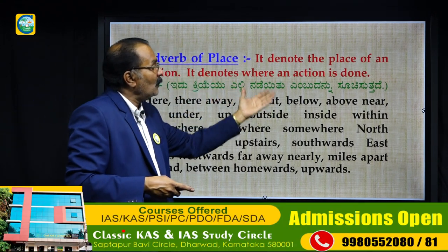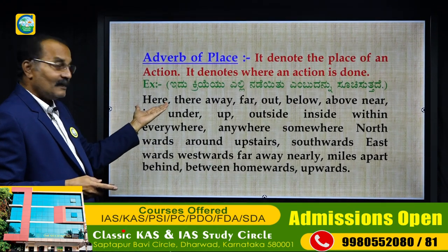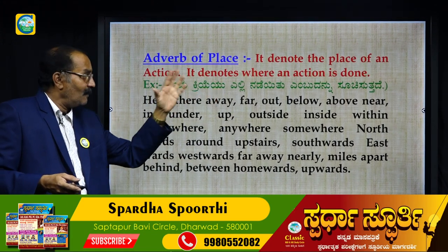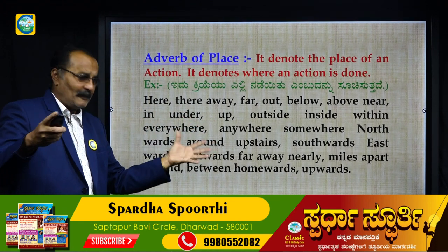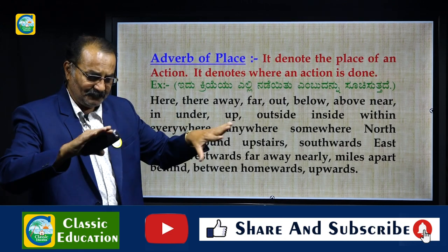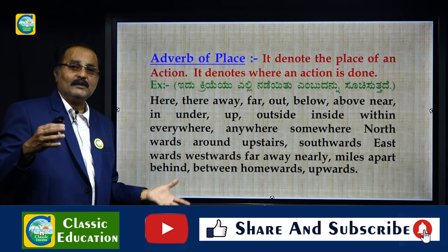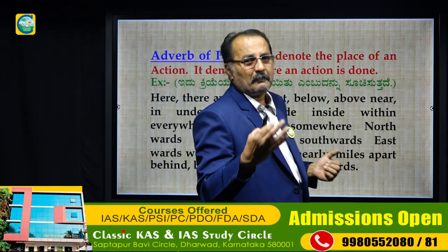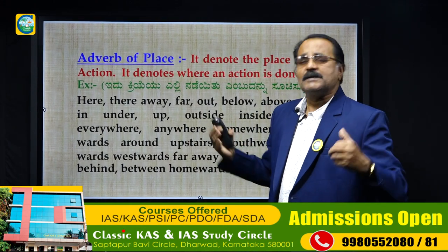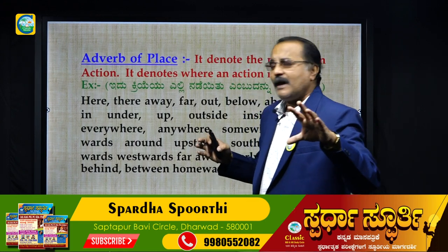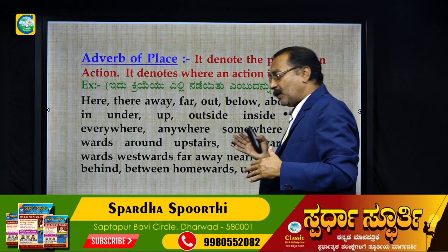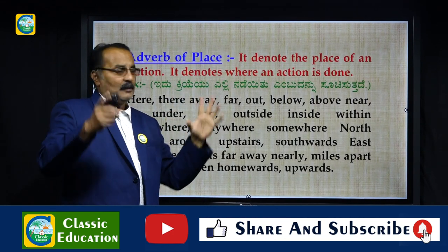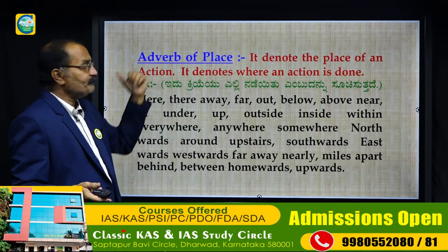Examples of adverb of place: here, there, away, far, near, below, above, under, up, outside. Note that words like these are also used as prepositions in other contexts, and we will differentiate those separately in the prepositions chapter. For example, 'near my garden' — these are clearly adverbs of place.